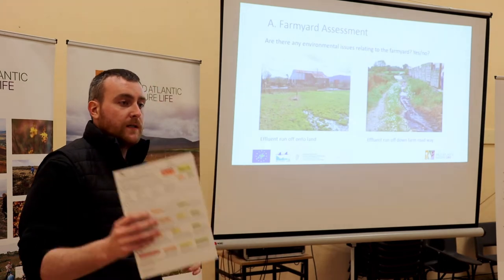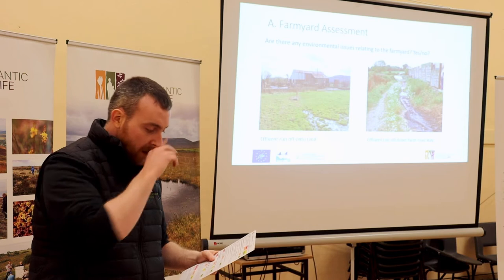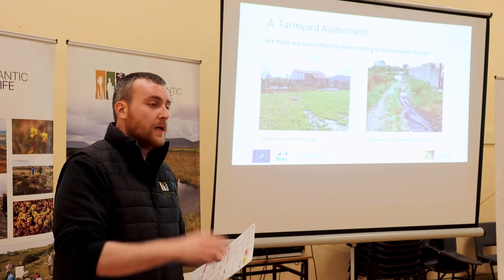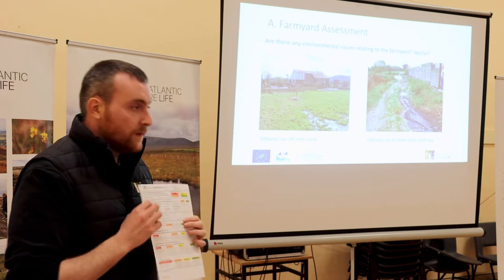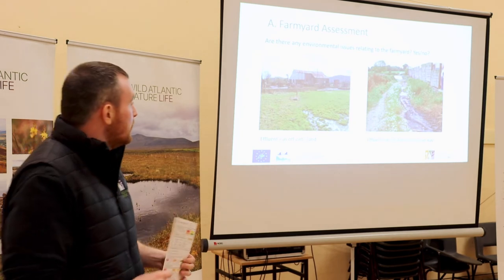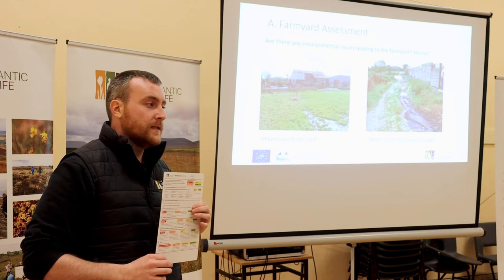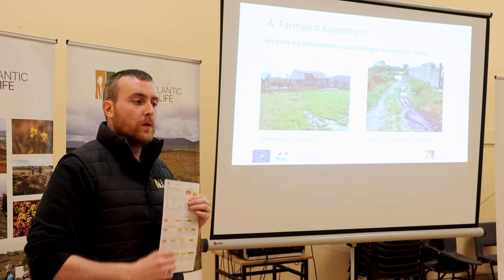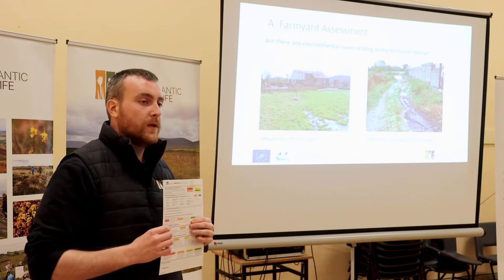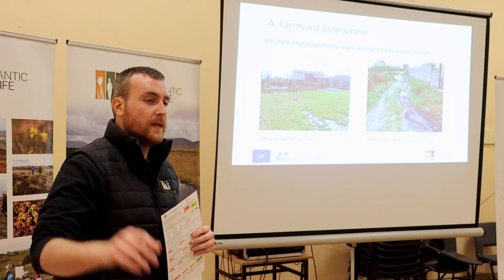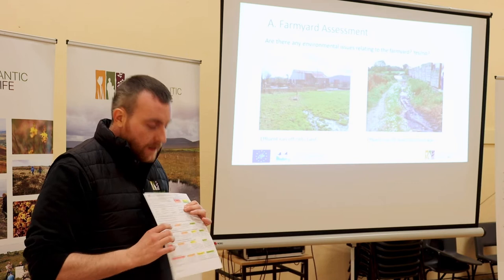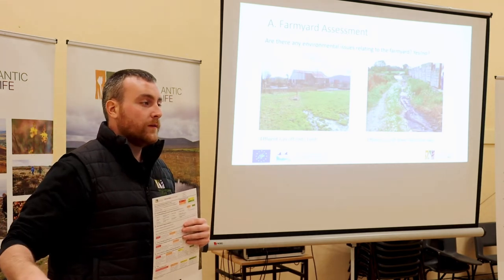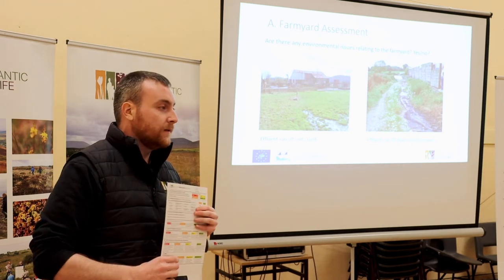You all have a whole farm scorecard in your packets. On your whole farm scorecard you'll see there are five sections: A, B, C, D, and E. Whatever your lowest score in any of these five categories is, that is what your whole farm score will be. So if in four sections you're scoring 1.2 but in one section you're scoring 0.6, your whole farm score will be 0.6. The reason is that all five categories are deemed so integral to water quality that a significant issue in one of them can't be ignored.